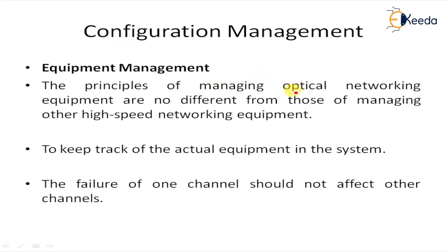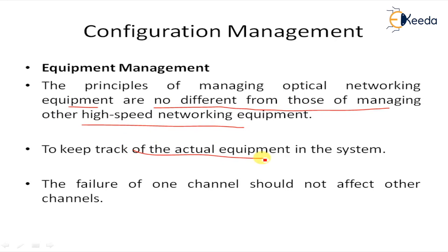The principles of managing optical networking equipment are not different from those of managing other high-speed networking equipment. We must be able to keep track of the actual equipment in the system — for example, the numbers and locations of optical line amplifiers, as well as equipment in each network element and its capability. In a point-to-point WDM system, we can track the maximum number of wavelengths and the number currently equipped, so failure of one channel should not affect other channels.